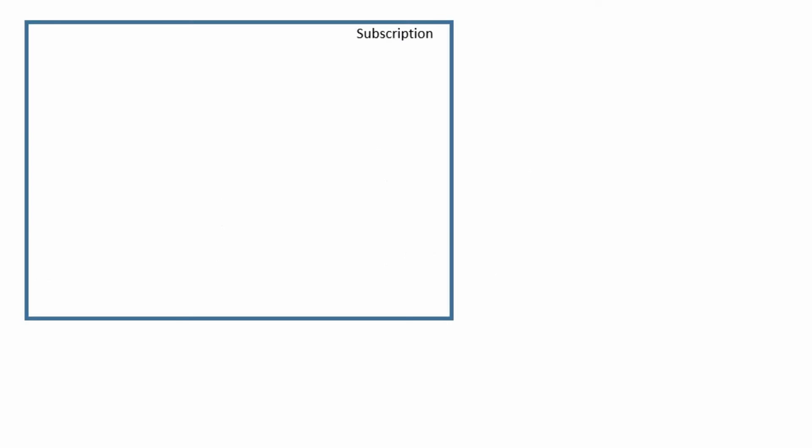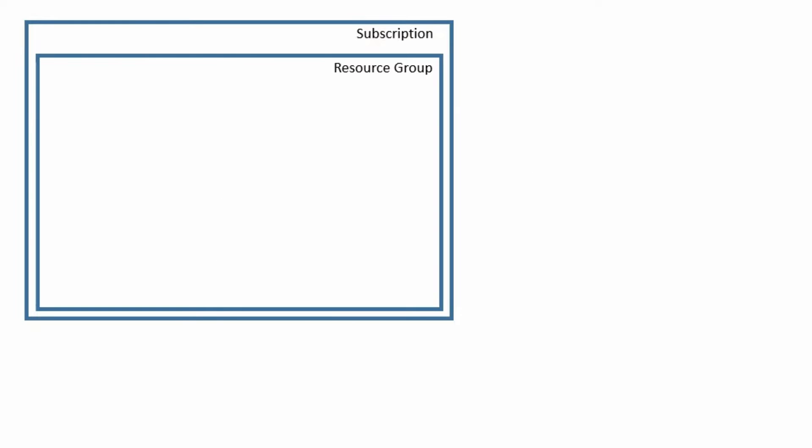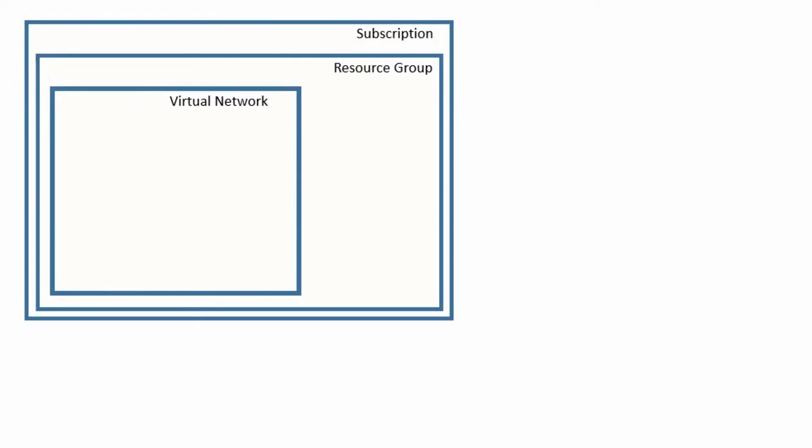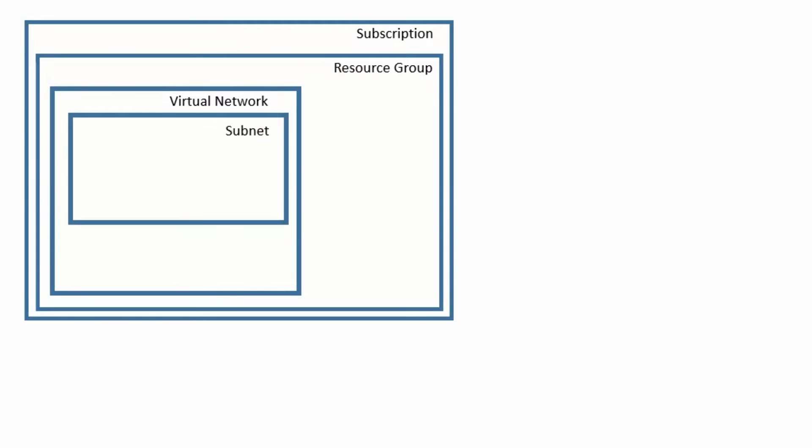Now let's discuss the diagram. First, we have an Azure subscription in the Azure cloud. Under the Azure subscription, we create a resource group, which is a logical container for Azure resources. Under the resource group, we create a virtual network. Under the virtual network, we create a subnet. We can have one or more subnets with IP ranges, and under the subnet we may have Azure resources such as Azure virtual machines.